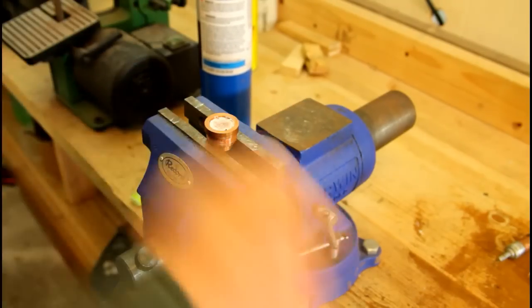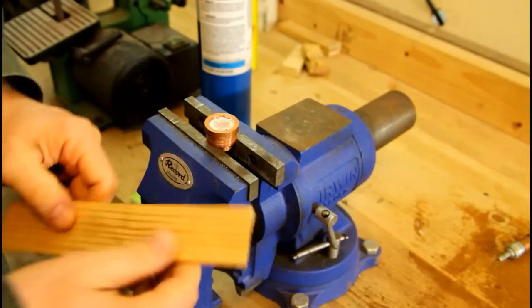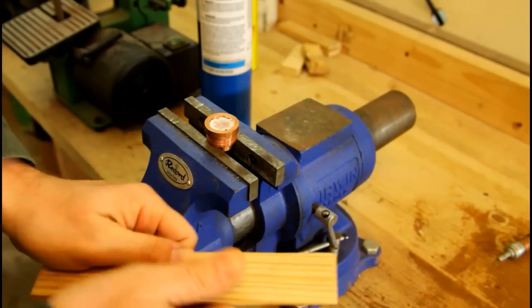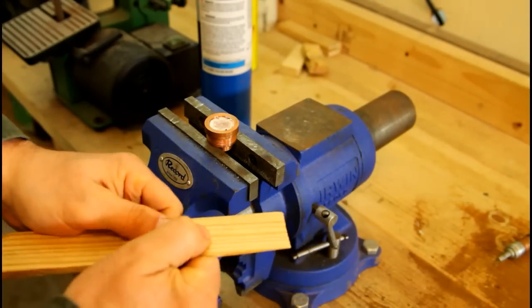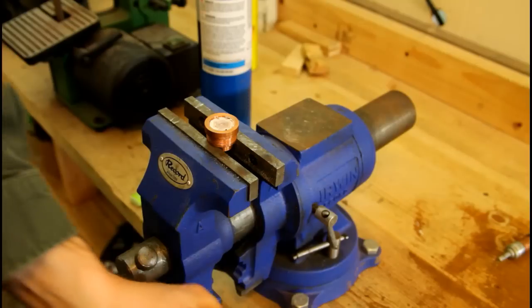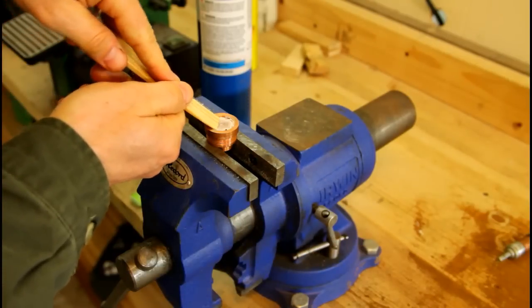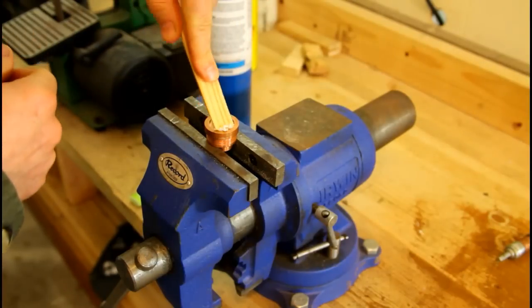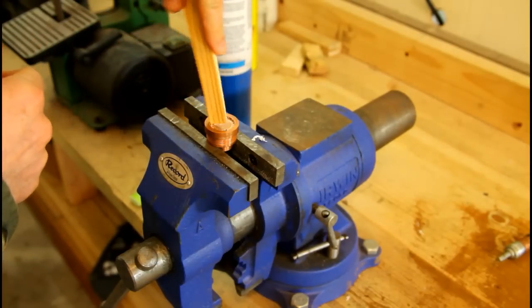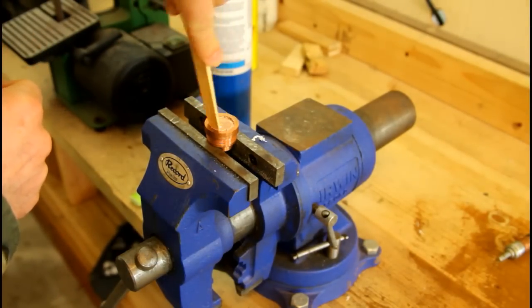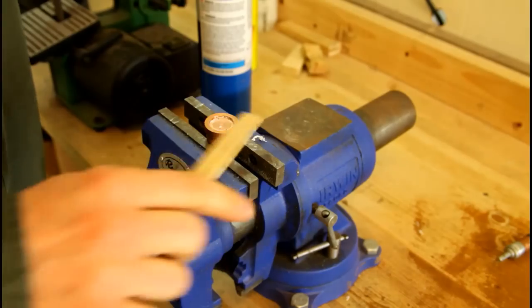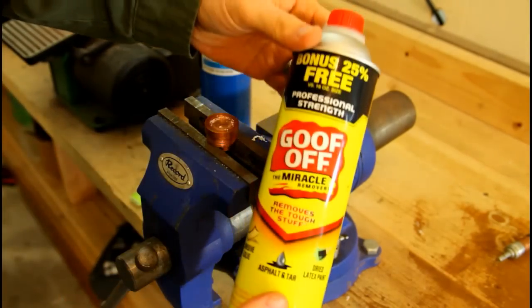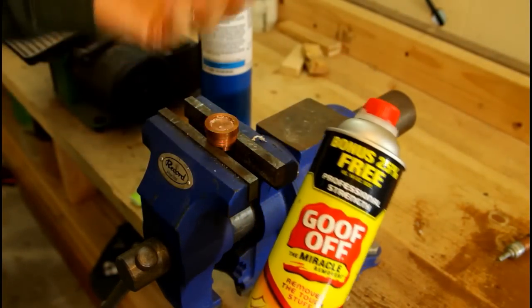To clean this off, I always recommend using like a piece of wood or something. Don't use something sharp like a screwdriver because you'll gouge the metal. Just kind of take it and you can clean it off like that and then to get the residue off. What I usually use is some of this. That'll clean whatever's left on there.